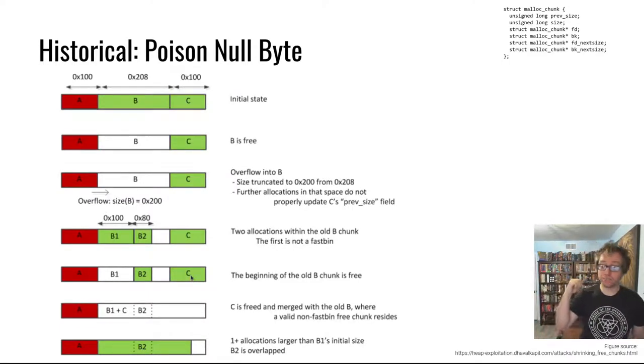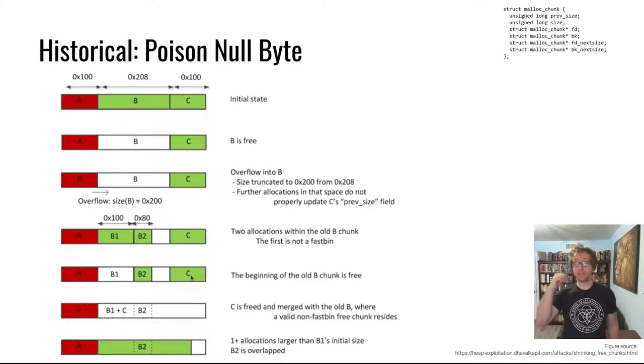And if the chunk behind it is free, it consolidates, it merges the chunk behind it and itself and adds that to the unsorted bin as a consolidated free chunk. And in this process, we forget all about the old allocation B that is still a valid allocation, but the heap has forgotten about it. And next time something is allocated, it will get allocated over B.